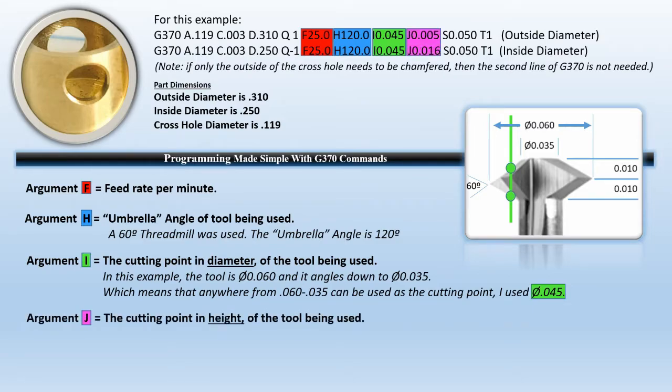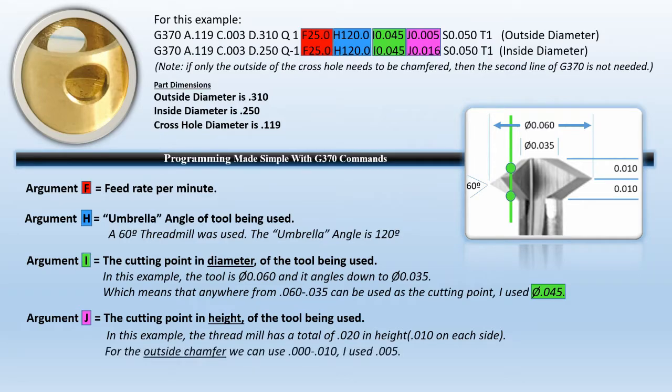J is the cutting point height for the tool being used. In this example, the thread mill has a total of .020 in height—you can see from the dimensions, .010 on each side. For the outside chamfer, we can use anywhere from 0 to .010; we used .005. For the inside chamfer, we can use anywhere from .010 to .020 because it's going from the point backwards, so we used .016. The dots are basically pointing toward the middle of the cutting section to help spread out the forces.